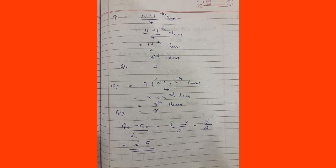The coefficient of quartile deviation is Q3 minus Q1 divided by Q3 plus Q1 = (8 − 3) / (8 + 3) = 5/11.